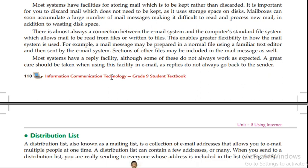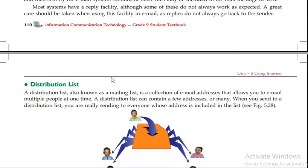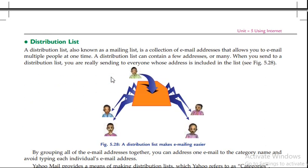Most systems have a reply facility. Replies don't always go back to the sender. The distribution list is also known as an emailing list. This is a collection of email addresses that allows you to email multiple people at one time.